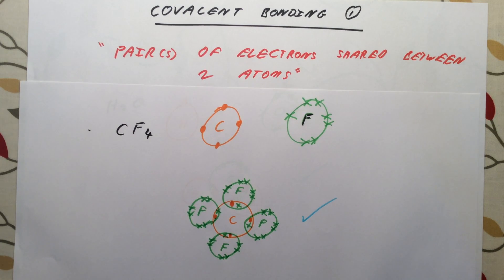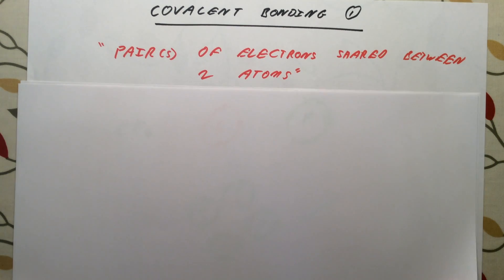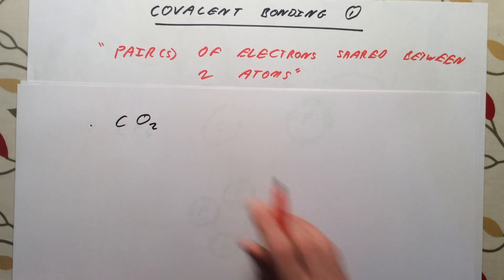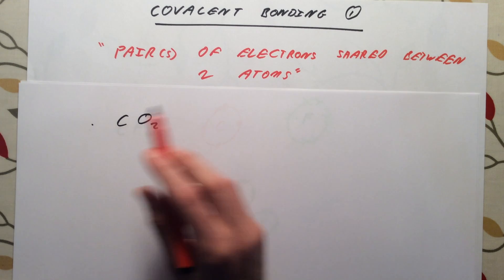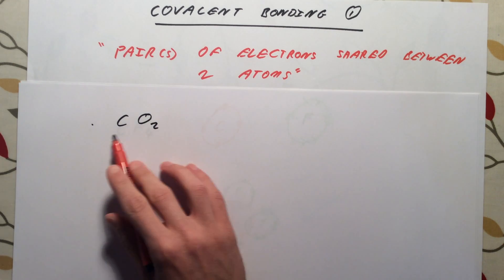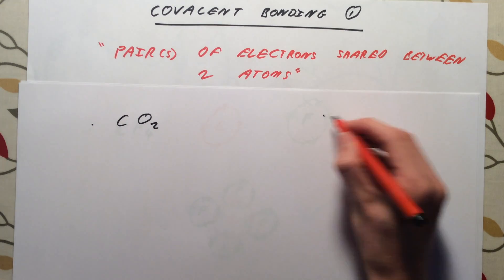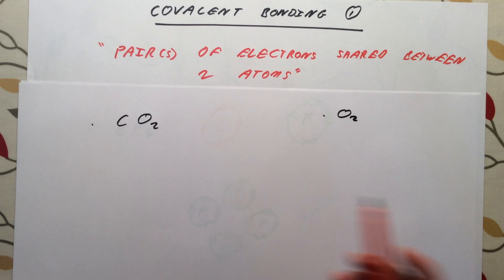The next example is for higher tier only: carbon dioxide, CO₂. The reason this is different is that it involves a double covalent bond. The two examples you need to know that have this are CO₂ and O₂. We're just going to focus on CO₂ in this video.